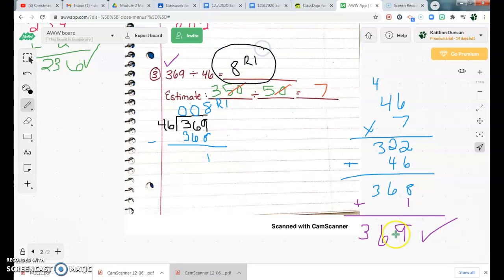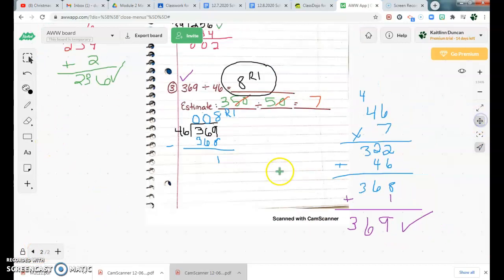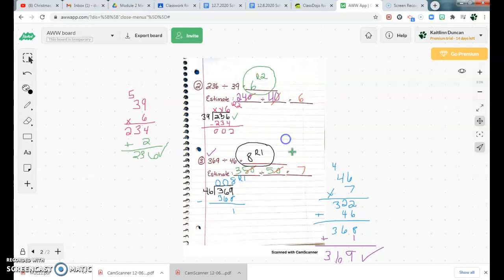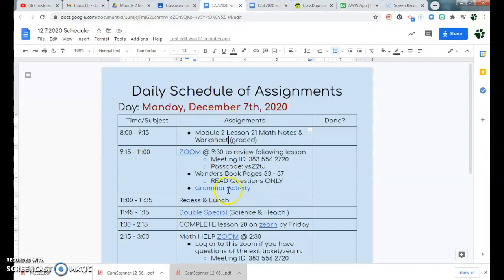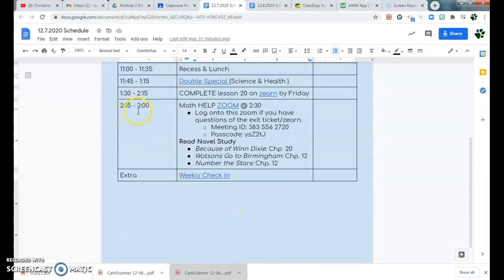All right, guys. That is our math notes for Module 2, Lesson 21. A lot of stuff we went over today. If you guys needed to rewind, pause, feel free to do that. You do have an exit ticket for this today. And you do have some Zern work that I want you to be completing. This afternoon, though, at 2:15... I'm sorry. I'm going to change that right there because that's kind of confusing. At 2:30, I am going to be logging on to Zoom.